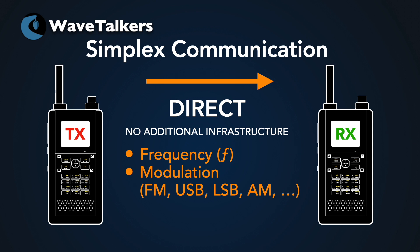We know that if we're on 20 meters, 17 meters, or any of the higher bands from that, we're going to be using upper sideband for our direct simplex communication. Whereas on the lower bands — 40 meters, 80 meters, 160 meters — we're going to be talking on lower sideband.